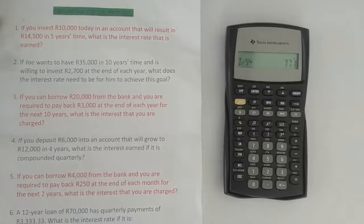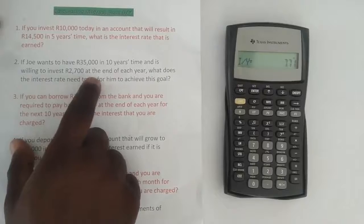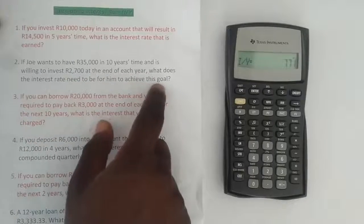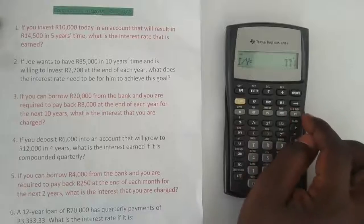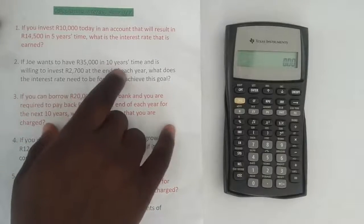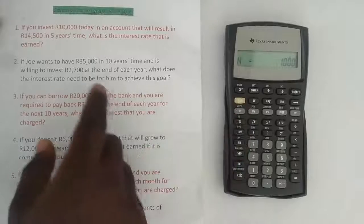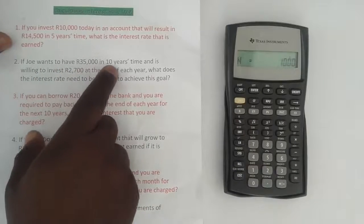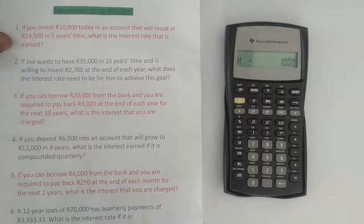The result is 7.71%. So if you invest 10,000 rand today and get 14,500 rand in five years time, the interest rate needs to be 7.71%. Moving on to the second example: if Joe wants to have 35,000 rand in 10 years time and is willing to invest 2,700 rand at the end of each year, what does the interest rate need to be? Clear the time value of money by pressing second function then FV. It's 10 years compounded annually, so press 10 then N.